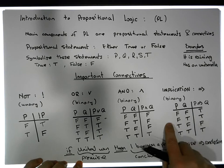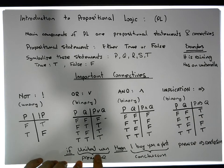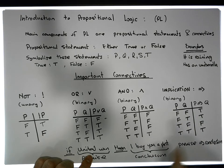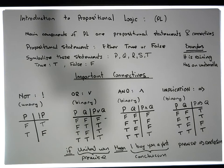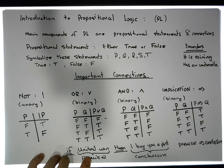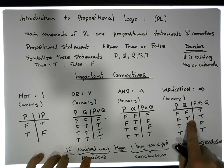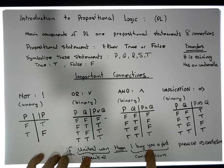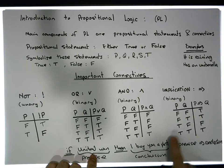Now the unusual one: false-true. United didn't win, but I did buy you a pint. Is that true or false? We're in the pub — I said 'if United win I'll buy you a pint.' United didn't win, so there's no expectation on me to buy a pint, but it doesn't preclude me from buying you one anyway. So I still haven't told any lies, and therefore false-true is also true.